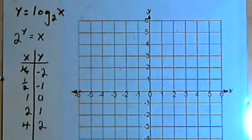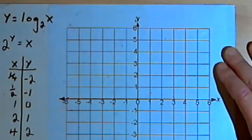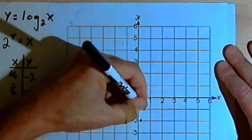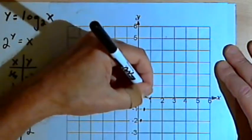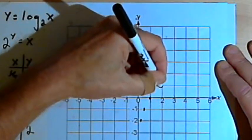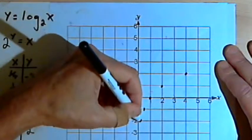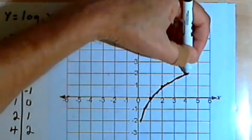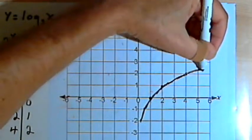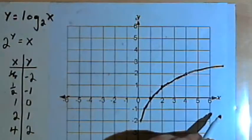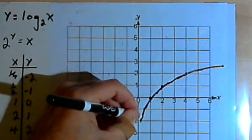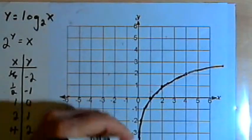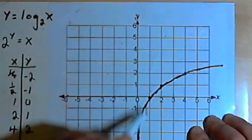Let's take these points and sketch in the graph to see what characteristics it has. I've got points at (1/4, -2), (1/2, -1), (1, 0) — right on the x-axis — (2, 1), and (4, 2). Connecting those points, the curve continues upward but not as quickly as x gets bigger. As x gets smaller, the curve approaches the y-axis but never reaches it, so we have a vertical asymptote at x equals 0.